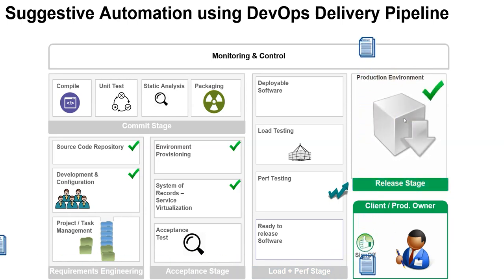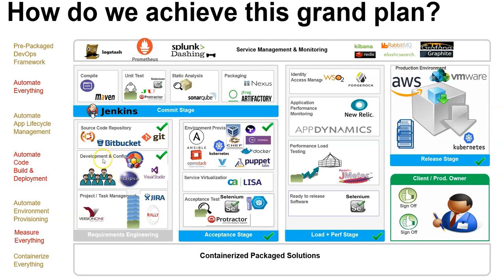If you see the tools involved at each stage: in development and configuration, developers use Visual Studio and Eclipse. The actual DevOps engineer work starts from source code repository — managed using Bitbucket, Git, or GitLab. Then we have Jenkins as a continuous integration tool. On Jenkins, we have Maven for Java compilation or MSBuild for .NET. For unit testing: Selenium, Protractor, JUnit. Static code analysis: SonarQube. Packaging: Nexus and Artifactory. Environment provisioning: Chef, Ansible, OpenStack, Kubernetes, Vagrant, Puppet, Docker.